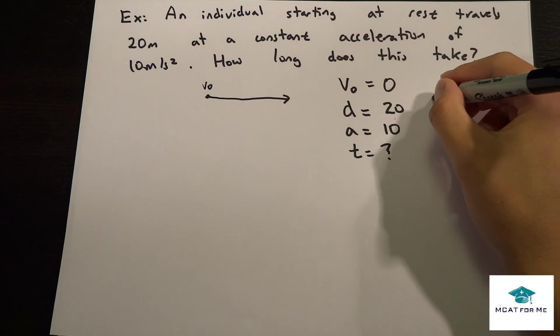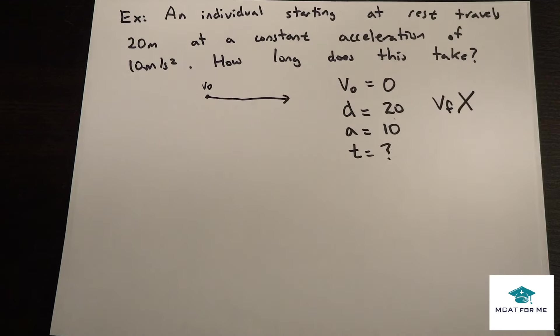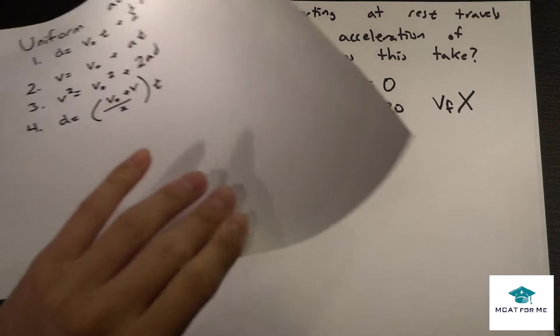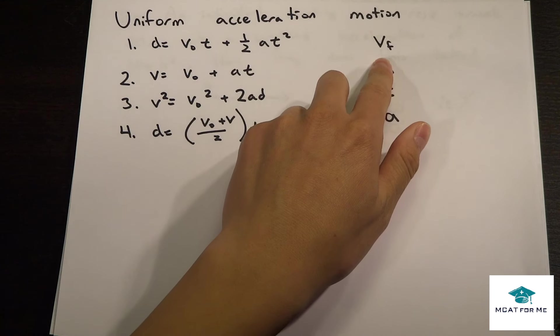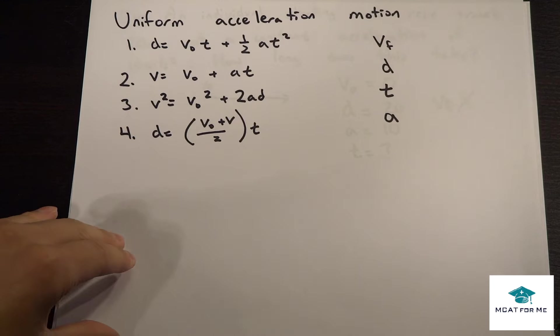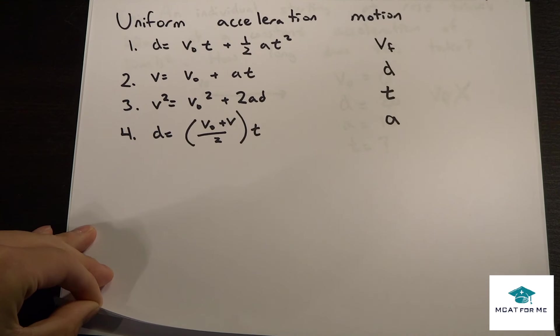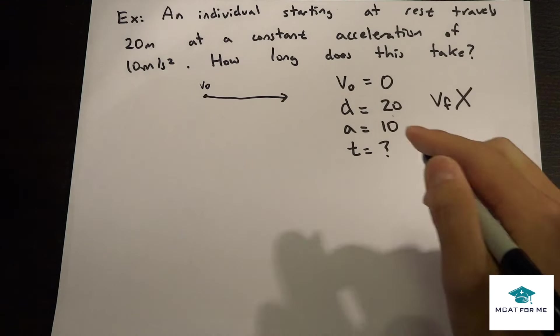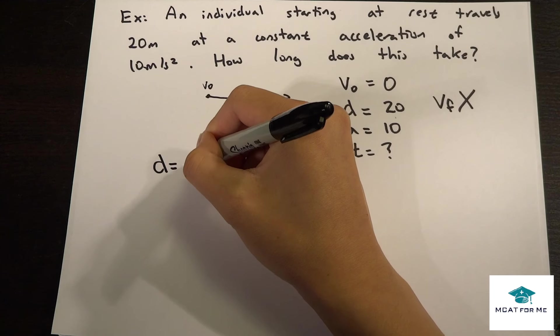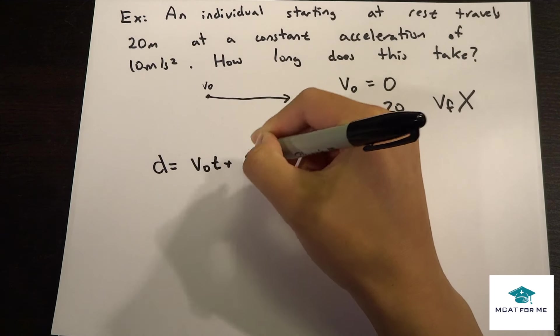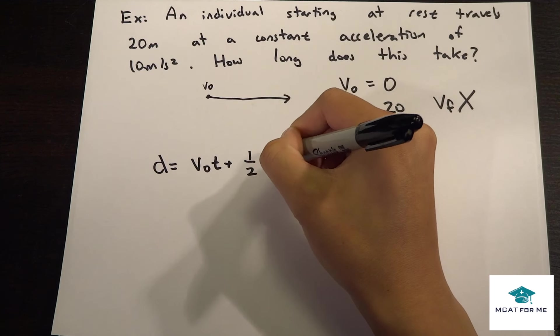But what didn't it give us? Well, it didn't give us V final. So we were never given V final. So we look back at our equation, if we're not given V final, we use the first equation right there.